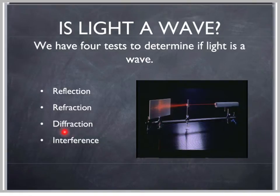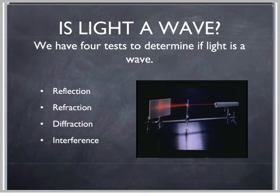Does light diffract? Diffraction is the spreading out of waves beyond an obstacle or a barrier in their way. Does light do that? And finally, does light interfere? If there are two sources of light, will I see constructive and destructive interference, maximums and minimums, nodes and anti-nodes? So let's explore this.